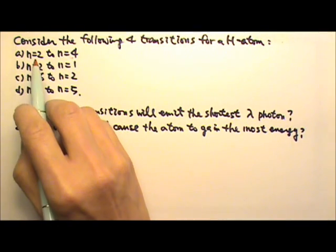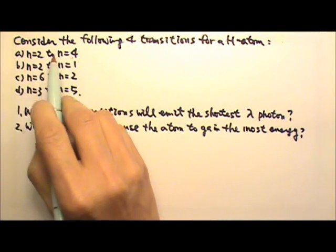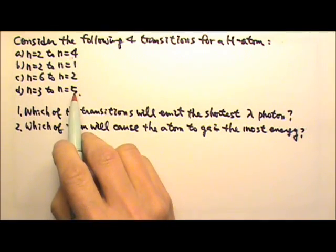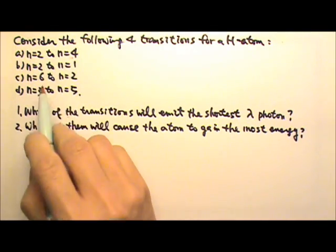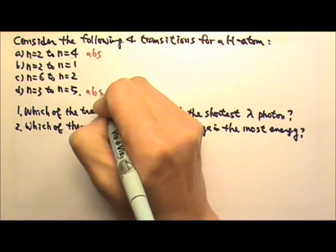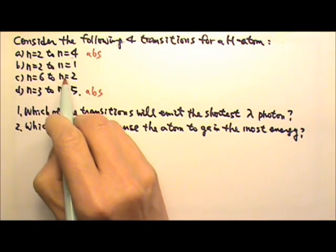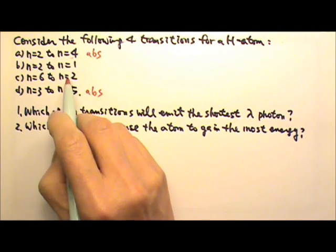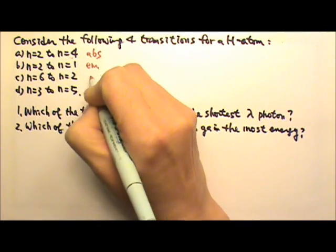a and d involve transitions going from lower to higher energy states, so these two have to absorb a photon. The other two go to a lower energy state, so they emit a photon.